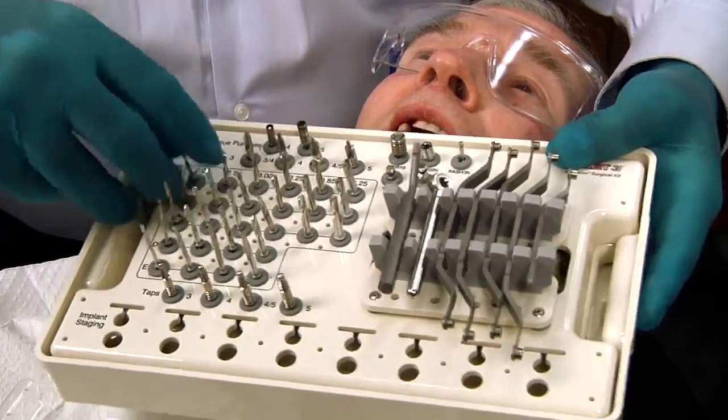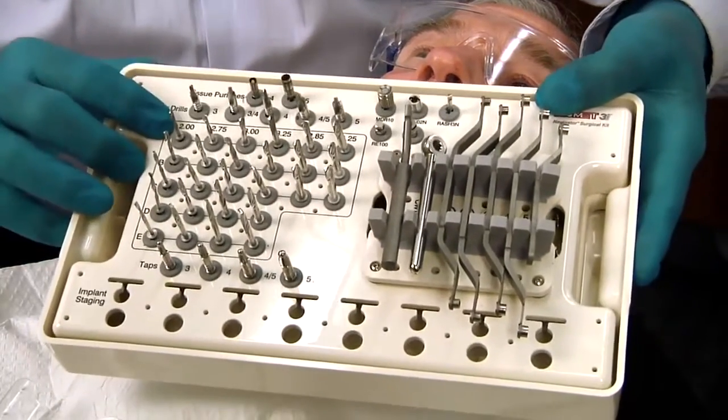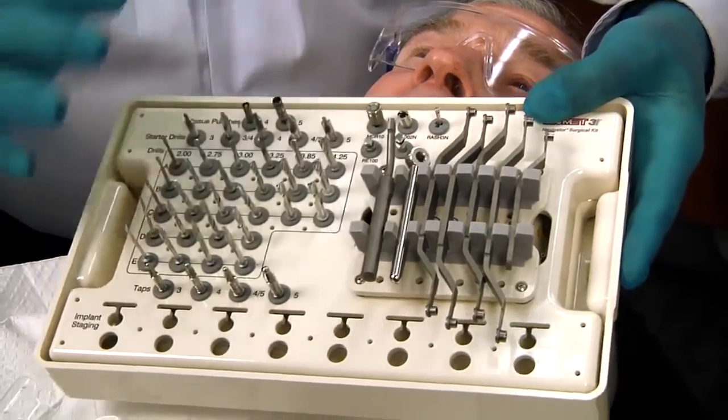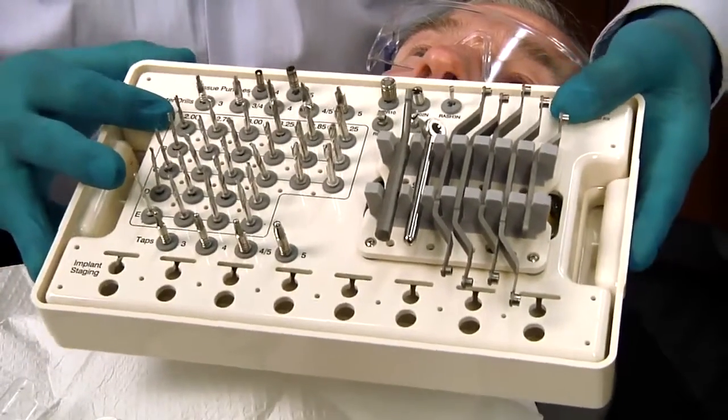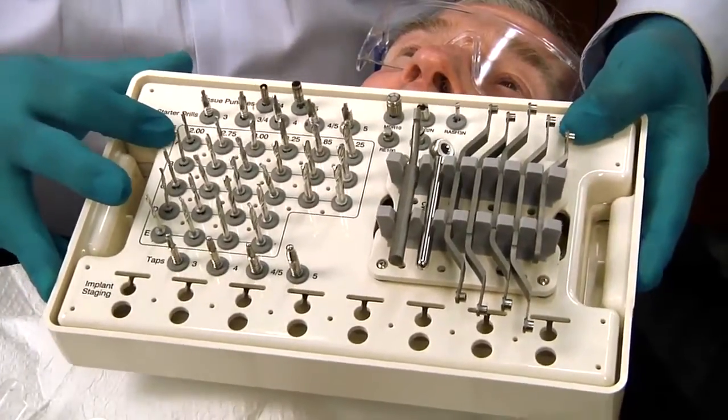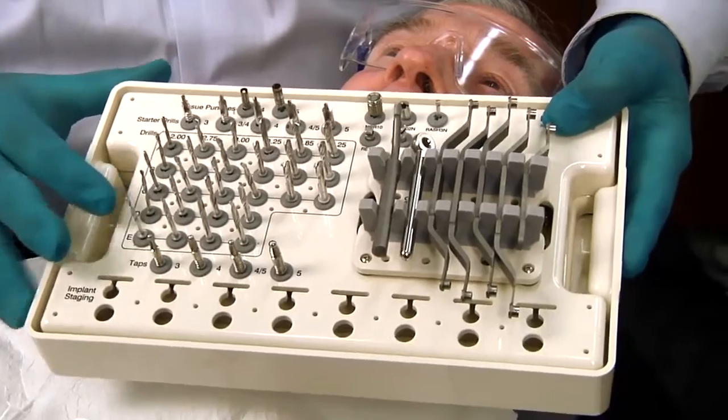As you can see, the drills come in 20, 275, 30, 325, 385, and 425. Additionally, they come in specific lengths which they designate by A, B, C, D, and E.